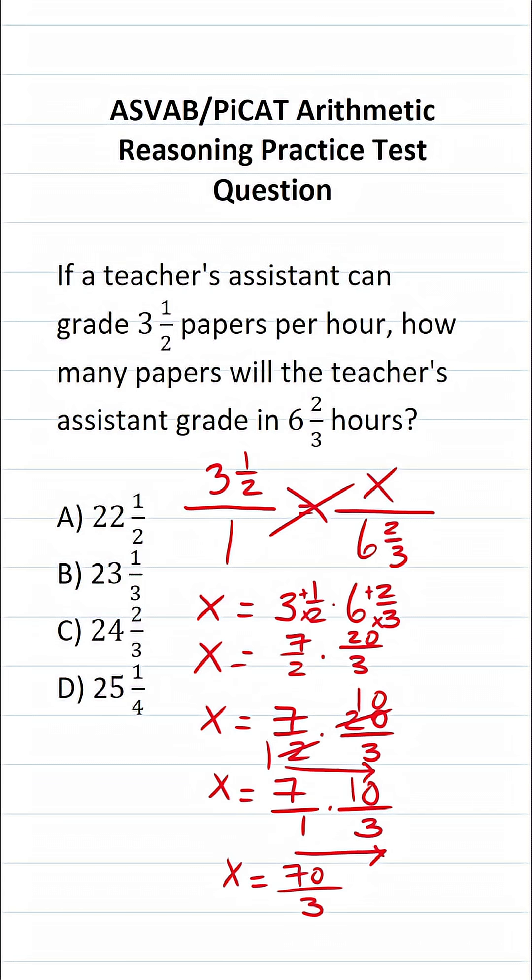So this isn't an answer choice because we can actually convert 70 over three to a mixed number. I'm going to do that via long division. You could read all fractions as long division. So I could read this as 70 divided by three.